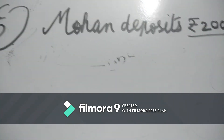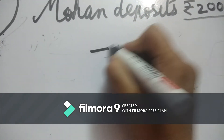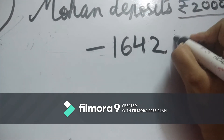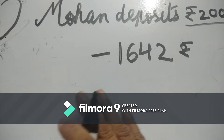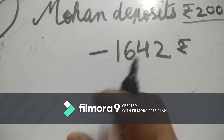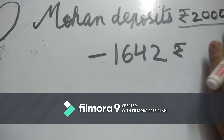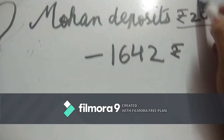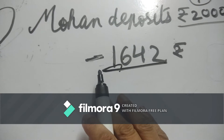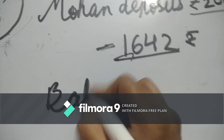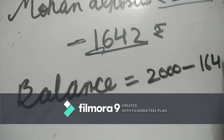If the amount withdrawn from the account is represented by a negative integer, then how will you represent the amount deposited? And find the balance. So here 2,000 rupees deposited is positive — we represent it with a plus sign. And the amount withdrawn is represented with a minus sign. So balance equals 2,000 minus 1,642.